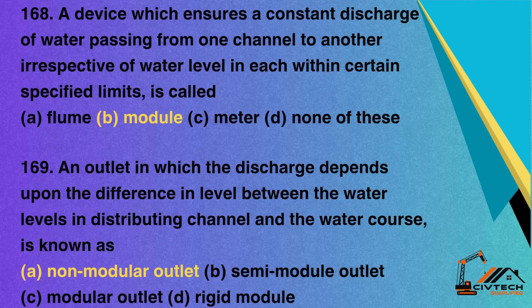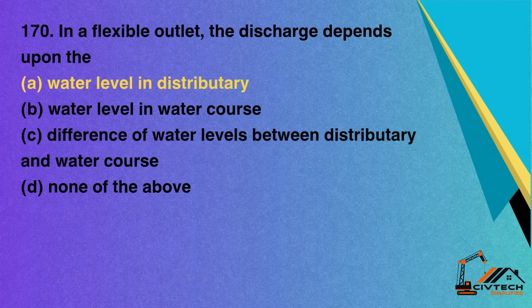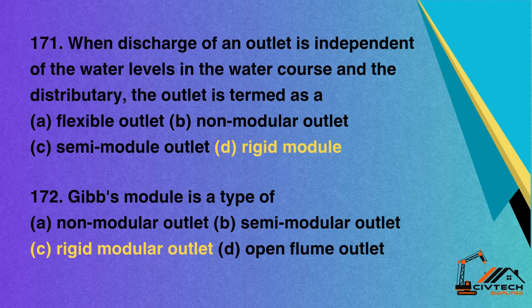Question 169: An outlet in which the discharge depends upon the difference in level between the water levels in the distributing channel and the water course is known as — A. Non-modular outlet; B. Semi-module outlet; C. Modular outlet; D. Rigid module. Correct option: A. Non-modular outlet. Question 170: In a flexible outlet, the discharge depends upon the — A. Water level in distributary; B. Water level in water course; C. Difference of water levels between distributary and water course; D. None of the above. Correct option: A. Water level in distributary. Question 171: When discharge of an outlet is independent of the water levels in the water course and the distributary, the outlet is termed as a — A. Flexible outlet; B. Non-modular outlet; C. Semi-module outlet; D. Rigid module. Correct option: D. Rigid module.